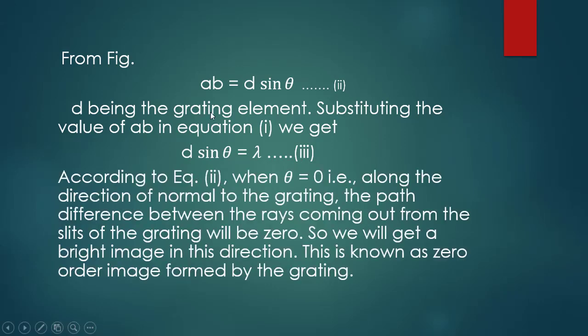According to equation 2, AB equals D sin theta. When theta equals zero — that is, along the direction of the normal to the grating — the path difference between rays coming out from the slits will be zero. We get a bright image in this direction. This is called the zero order image formed by the grating.